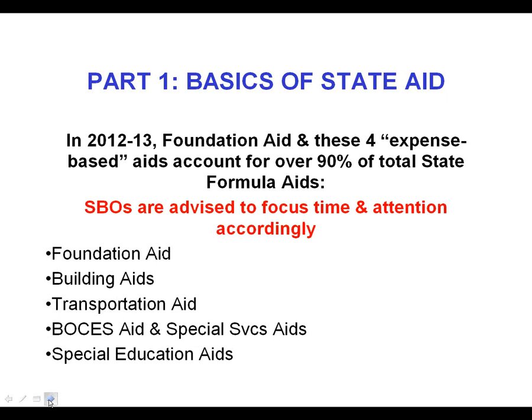We know that the business folks in school districts are extremely busy and state aid is extremely complex. But the combination of foundation aid and four expense-based aids account for over 90% of the total state formula aids that we administer in this office. So from a time-resources or risk management perspective, if you do decide to spend some time learning more about state aid, this is where the big bucks are. These are also the most complex formulas — they have the most moving parts and the most raw data items involved.